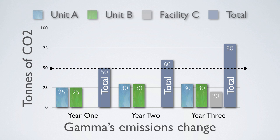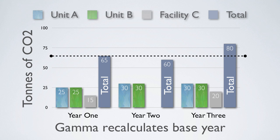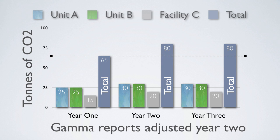In order to maintain consistency over time, the company recalculates its base year emissions to take into account the acquisition of facility C. In this example, the base year emissions increased by 15 tons — the quantity of emissions produced by facility C in Gamma's base year. As a result, the recalculated base year emissions are 65 tons. Recalculating greenhouse gas emissions for all years between the base year and the reporting year is not necessary. However, if Gamma chose to do so, it would report 80 tons as the recalculated emissions for year two.